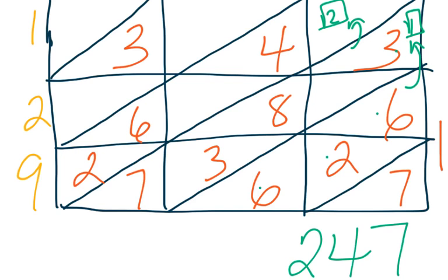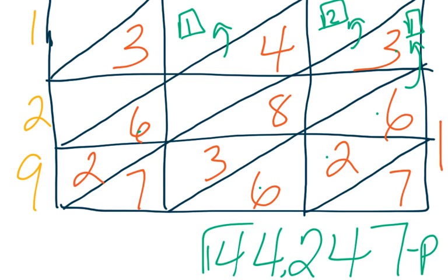So now 6 plus 4 is 10. Plus 2 more is 12. Plus 2 more is 14. So 14. We regroup 1 up to here. Then 3 and 1 is 4. So 44,247 is our product.